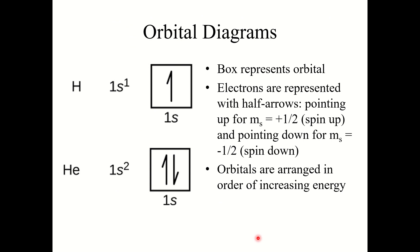Let's look at orbital diagrams. Electron configurations are shown on the left, and orbital diagrams are on the right. In orbital diagrams, a box represents an orbital, and electrons are represented with half arrows — not full arrows. A half arrow pointing up corresponds to ms = +1/2, and a half arrow pointing down corresponds to ms = −1/2, spin down.